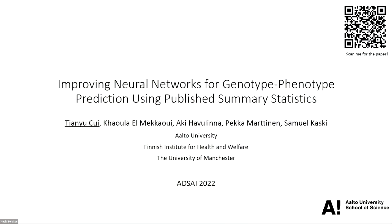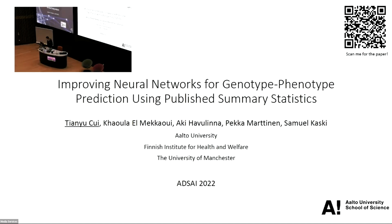I'm Kei Yu from Ottawa University. I'd like to present our recent submission: Improving Neural Networks for Genotype-Phenotype Predictions Using Published Summary Statistics. This is a joint work with Kola, Aki, Becca, and Samikaski. If you are interested in the full paper, you can scan the QR code in the corner to access the link.